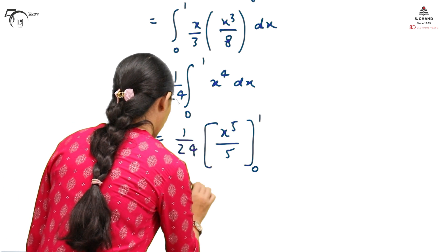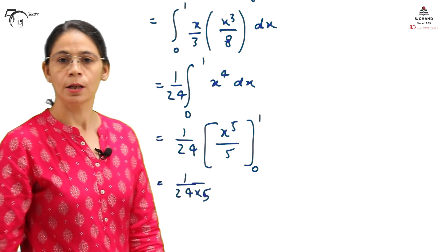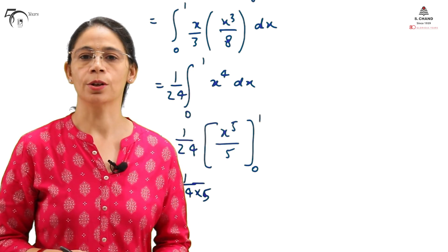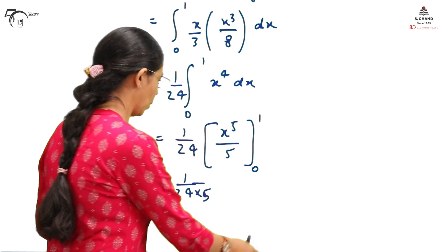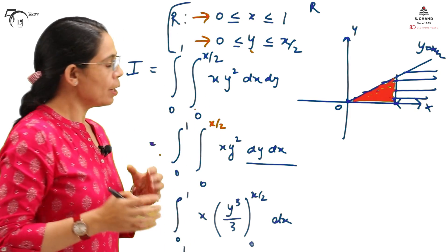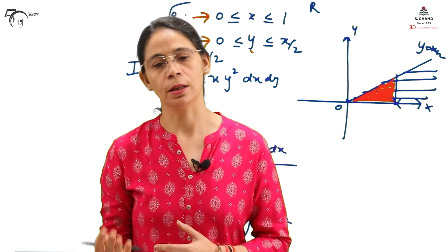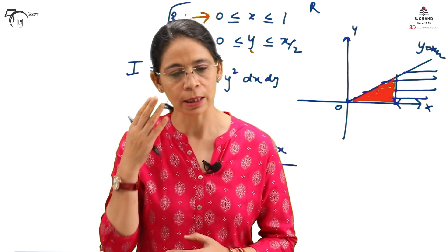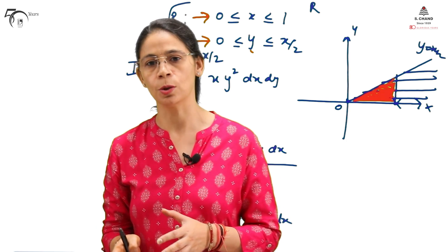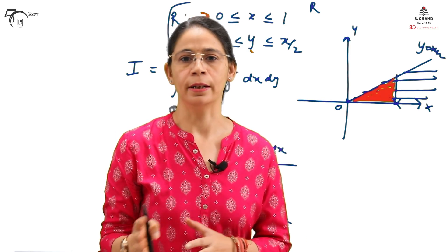Applying integration rules: x⁴ integrates to x⁵/5 with limits 0 to 1, giving 1/(24 × 5) = 1/120. This is the result of integrating xy² over this region of integration. If we integrate the same function over a different region, the solution will be different — that is what I said at the start: the region of integration plays a vital role in the final result.